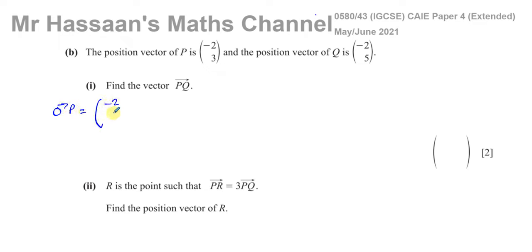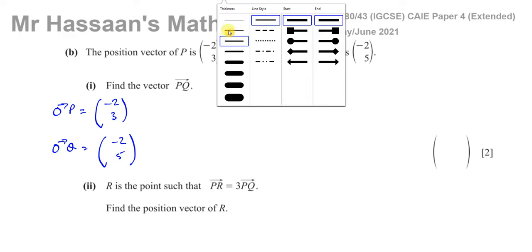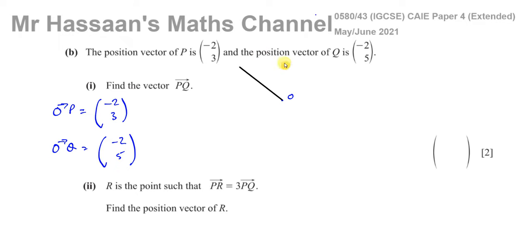To get from O to P you go (-2, 3), and the vector from O to Q is (-2, 5). We can make a little sketch. If that's the origin, the vector from O to P is (-2, 3), so P is up here somewhere. And from O to Q is (-2, 5), so it's basically in line with P, just slightly higher up.